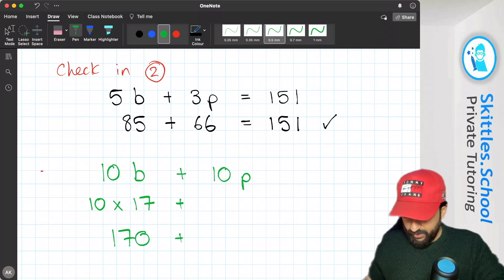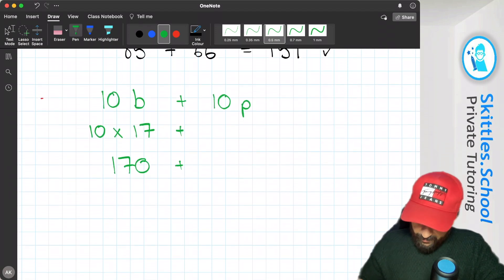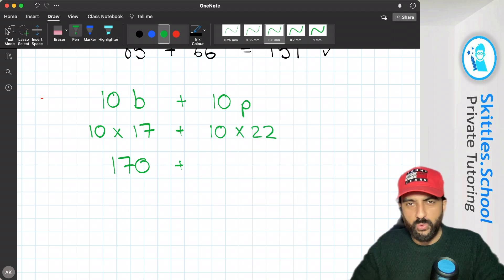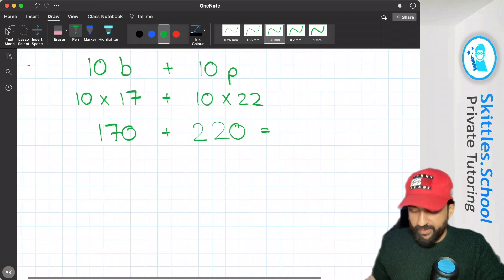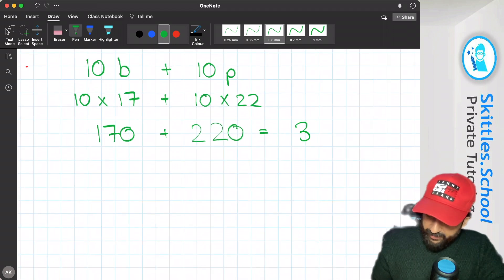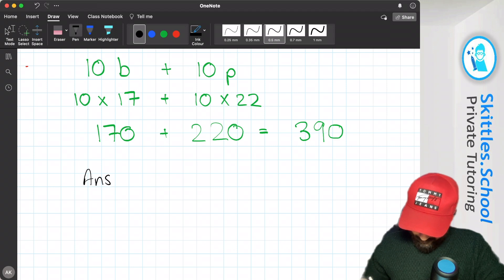And 10 pears. We worked out pears earlier on that were 22. So 10 times 22, and 10 times 22 is 220. If we add those together, we get 390.